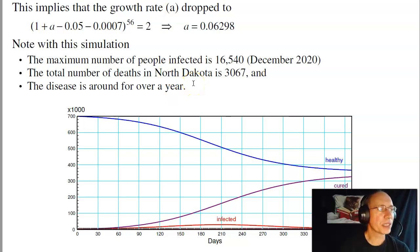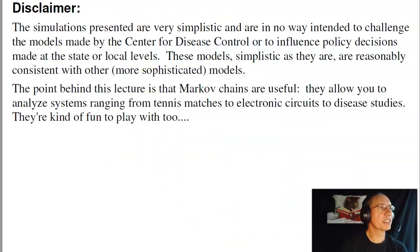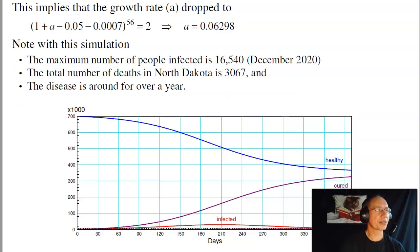But the point of this lecture, again, is simply to say that Markov chains are useful. They model more than just electric circuits. And it's also kind of fun. With what we know right now, we can do things like simulate the coronavirus outbreak. And we can ask questions such as, what happens if you self-isolate? Why are people self-isolating? What happens if you wear masks? What happens if a vaccine gets released? And based upon the current trends, what can we expect?